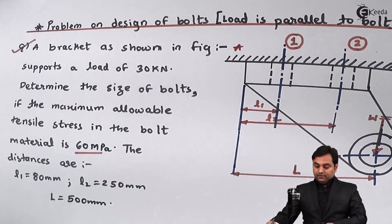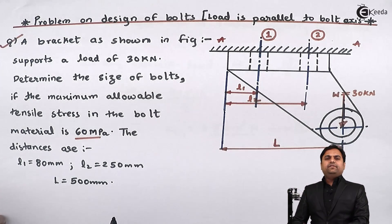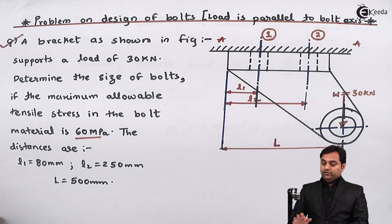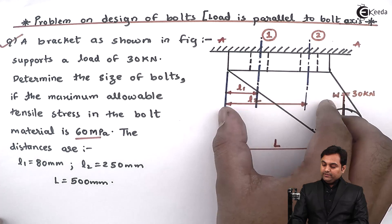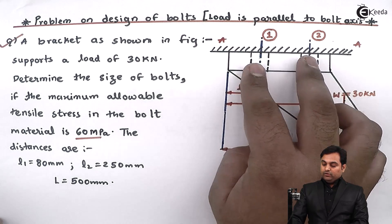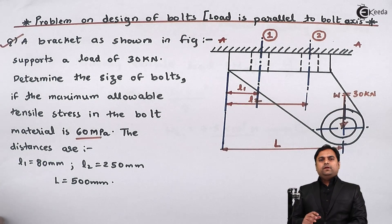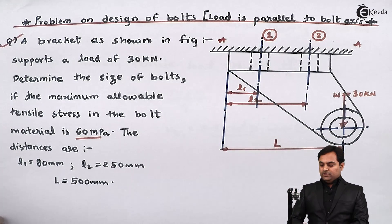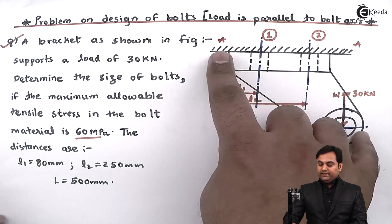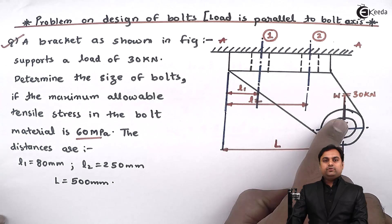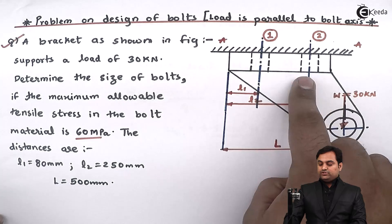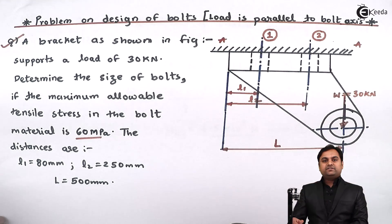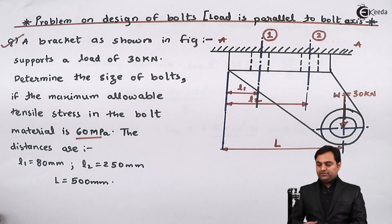The primary tensile load acts equally on all 4 bolts. When the load acts, the bracket gets pulled down and all 4 bolts are stretched — that is the primary tensile load effect. For secondary tensile load, the bolts are not stretched equally. Bolts closer to point A, the tilting edge, are far from the load and stretch less, while bolts closer to the load stretch more. This unequal stretching causes the bracket to tilt, subjecting bolts to secondary tension.